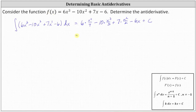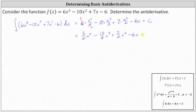And now we simplify. Six and four share a common factor of two — three twos in six, two twos in four — which gives us 3/2 x⁴ - 10/3 x³ + 7/2 x² - 6x + c.